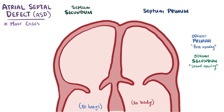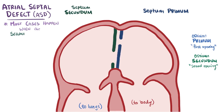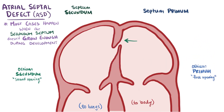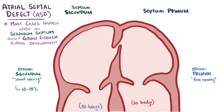Most ASD cases are due to the ostium secundum, which can happen when the secundum septum doesn't grow enough during development. This actually accounts for about 10-15% of all congenital heart defects and is the most common congenital heart defect in adults.